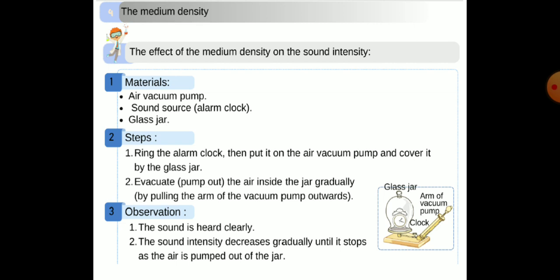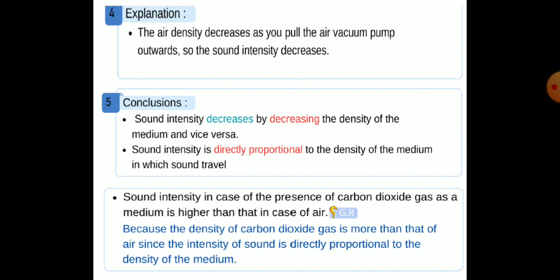Number four: the medium density. The conclusion: sound intensity decreases when decreasing the density of the medium, and vice versa. Sound intensity is directly proportional to the density of the medium in which sound travels. Give reason: sound intensity in the case of carbon dioxide gas as the medium is higher than in the case of air, because the density of carbon dioxide gas is greater than that of air.